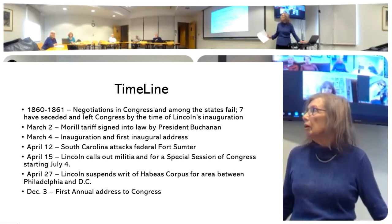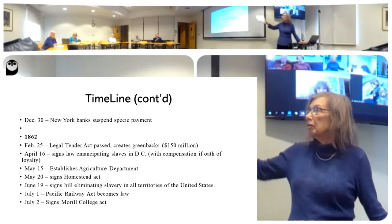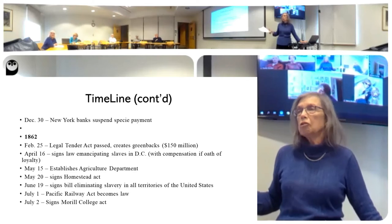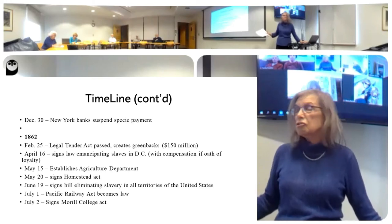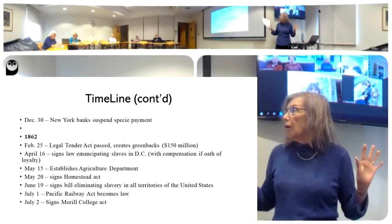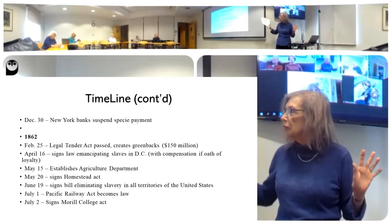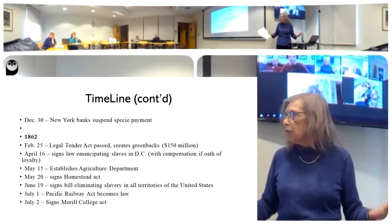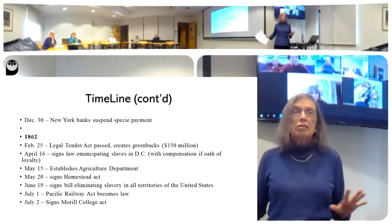So this is your first section. An important development happens in the world after that — New York banks suspend specie payment, which means they no longer give you gold for your government bonds. Then in 1862, it is a whirlwind on the economic policies: some legal tender, some action on slavery, the Agriculture Department, the Homestead Act, the Railroad, and the College Act — all of those in a matter of less than six months.